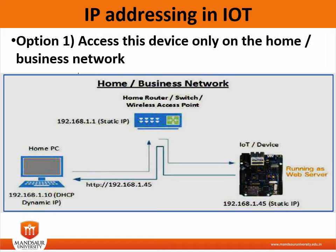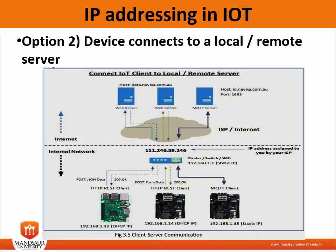This schematic diagram shows a scenario where an IoT device is configured as a service. The easiest way is to assign a static IP address that is coded into the device. When you connect to the IoT device, data is passed through the switch with no routing required.